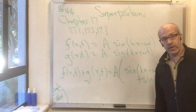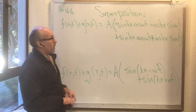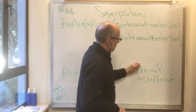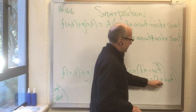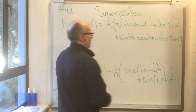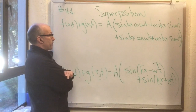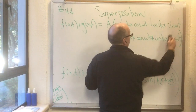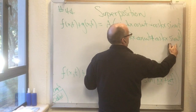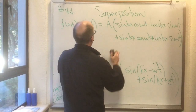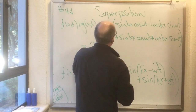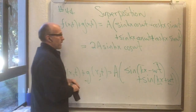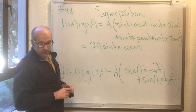Applying trig identities for sine of something minus something and sine of something plus something, two terms cancel — the −cos(kx)sin(ωt) and +cos(kx)sin(ωt) cancel — and the remaining terms add to give 2A sin(kx) cos(ωt). This result is the subject of section 17.2.